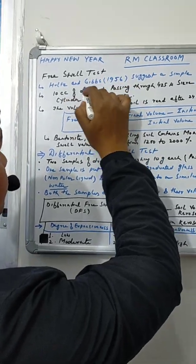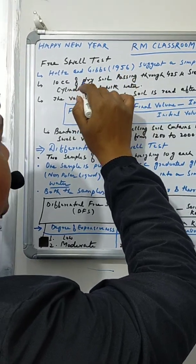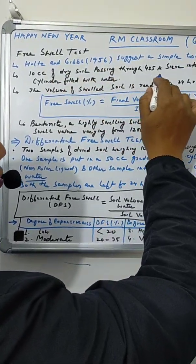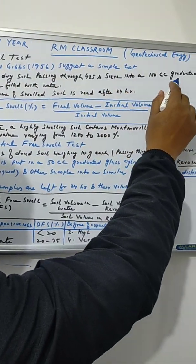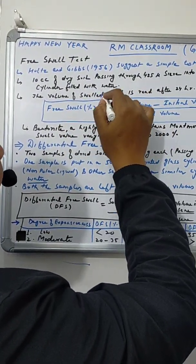This test was given by Holtz and Gibbs in 1956. In this test, 10 cubic centimeters of dry soil passing through 425 micron sieve into 100 cc graduated cylinder filled with water, and then after 24 hours you have to read the volume of swelled soil.